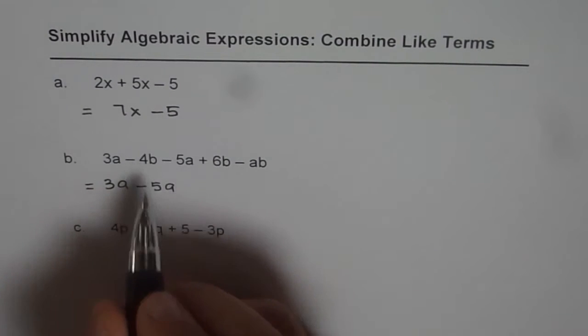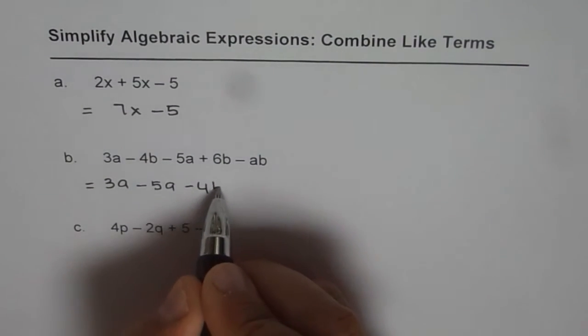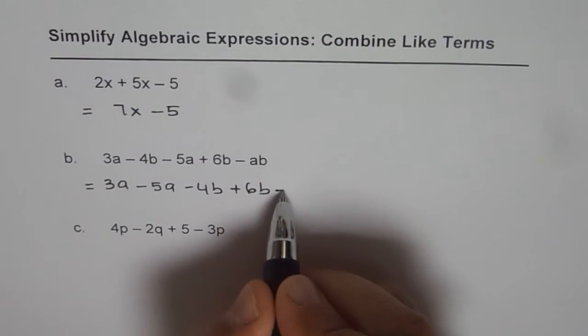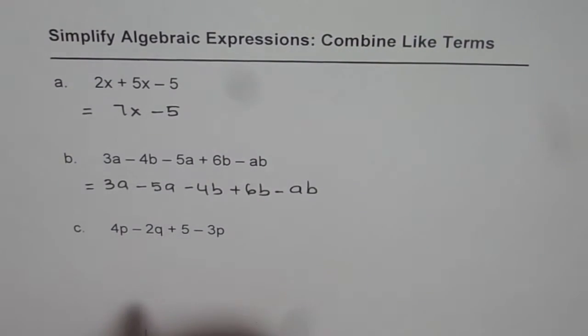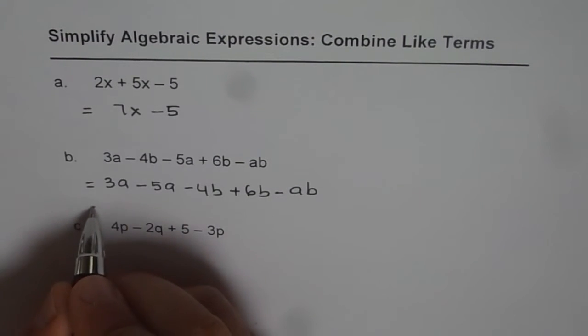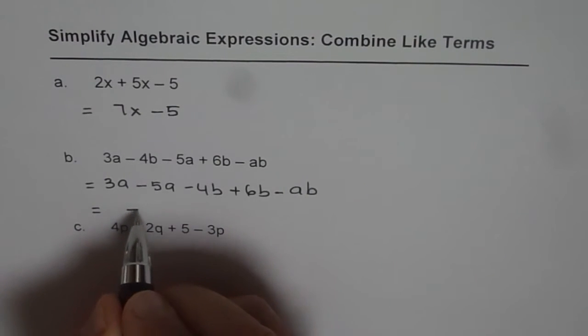Now, the next term is minus 4b, so minus 4b plus 6b. And then we have the fifth term as minus ab. Now, we can combine the like terms. The like terms are 3a and minus 5a. If we combine them, we get minus 2a.